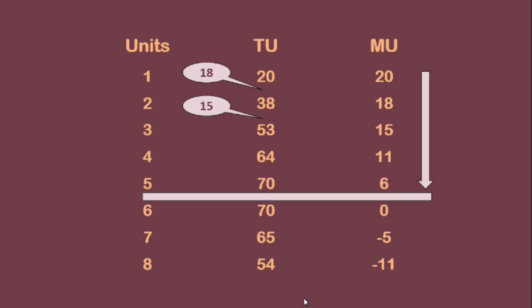Similarly, when total utility increases from 53 units to 64 units, the rate of increase is 64 minus 53, which is 11 units. Thus, when marginal utility falls, total utility increases at a decreasing rate.